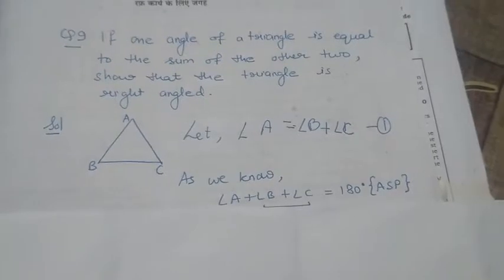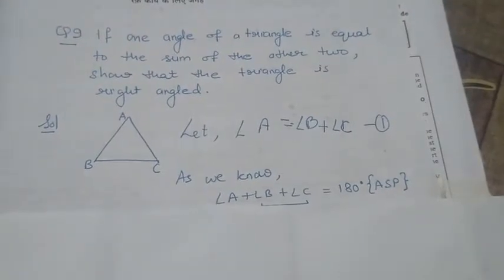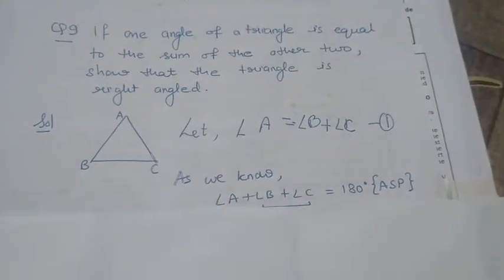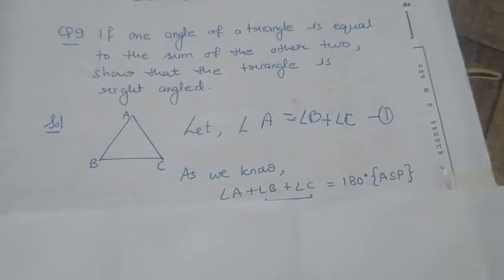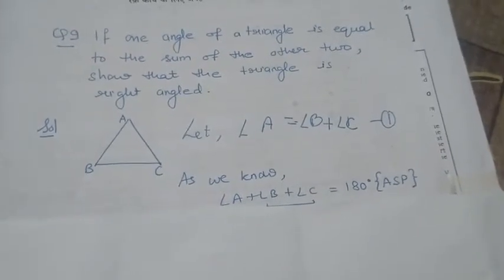As we know, angle A plus B plus C equals 180 degrees by angle sum property. We will substitute equation number one.